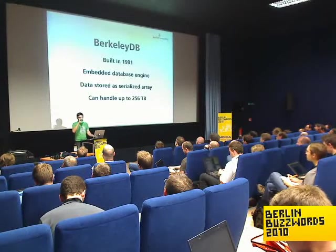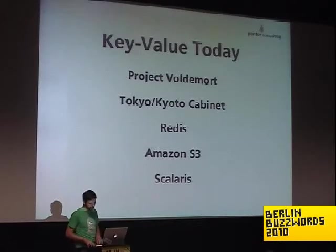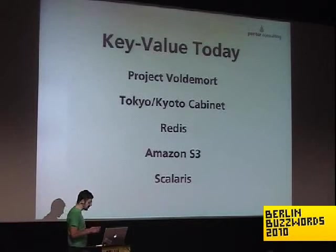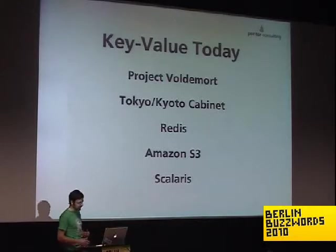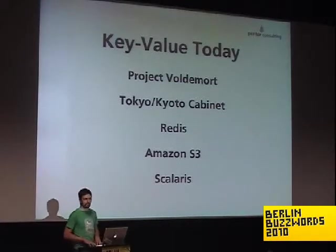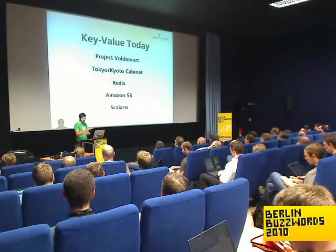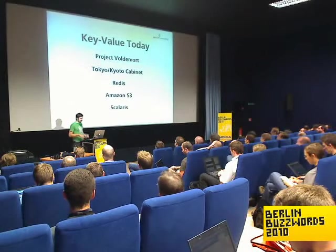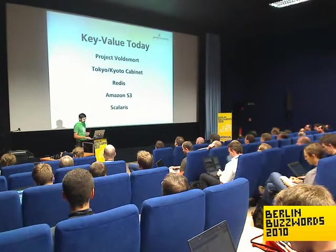Modern key-value stores: today you would find Project Voldemort, for example; Tokyo or Kyoto Cabinet — the author likes to build one tool, leave it, and build a new one; Redis; and Amazon's S3, probably the best example of a key-value store that a lot of people have already used. It's a pretty awesome tool and I really love using it. And there's also Scalaris. I'm just giving you five examples. It's become pretty hip to write your own key-value store, but these are pretty much in widespread use.